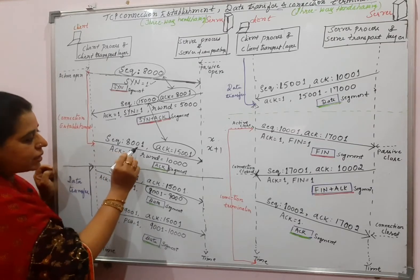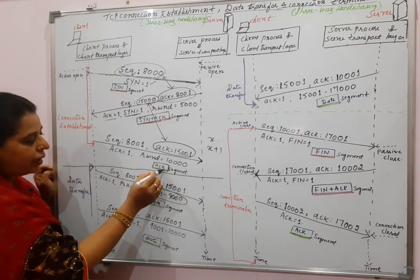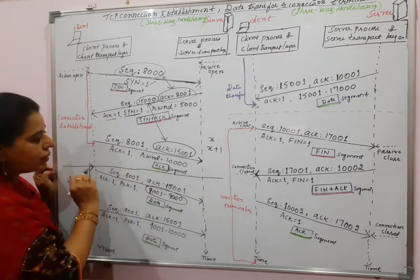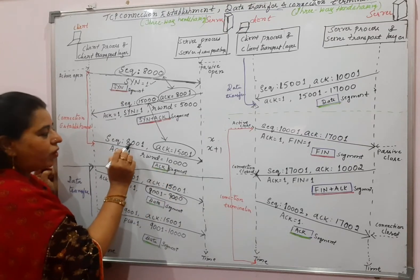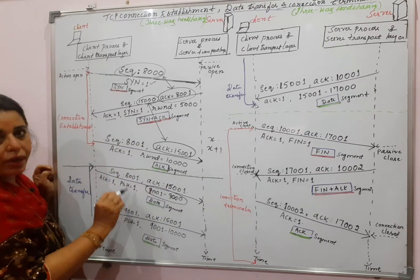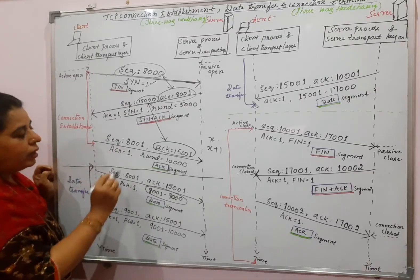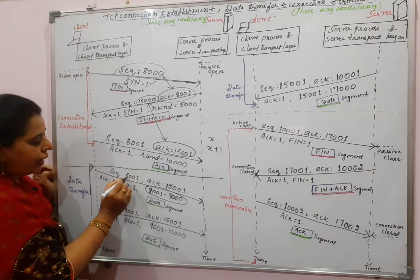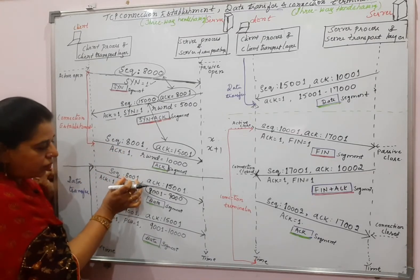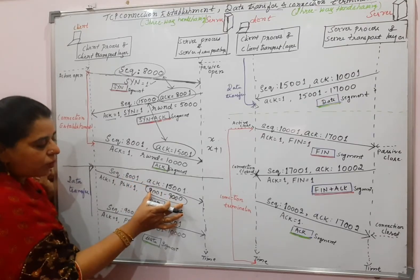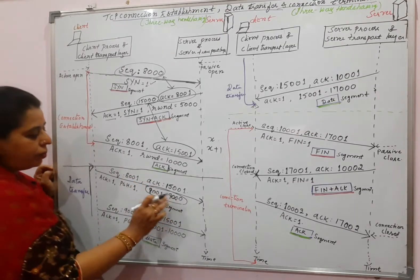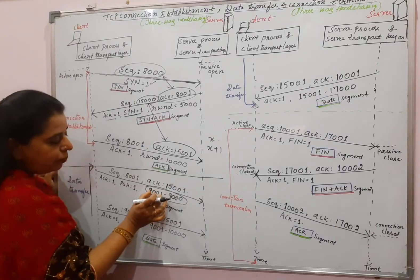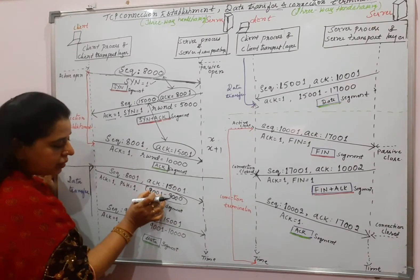Why 8001? As I said previously, the client had sent an ACK segment which holds 8001 as the sequence number, and ACK without data — the sequence number used can be reused; it does not get consumed. That is why here it writes the sequence number again as 8001, and the range of bytes is 8001 to 9000. Remember that the first byte in the segment is always called the sequence number.